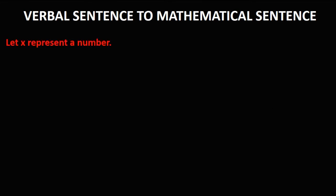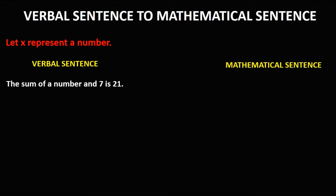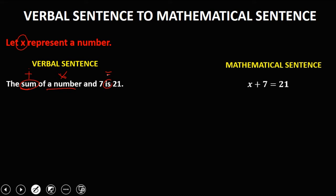So we have this problem. Let x represent a number. This is a verbal sentence and we need to write the mathematical sentence. 'The sum of a number and 7 is 21.' Since we let x represent a number, 'a number' is x, 'sum' means plus, and 'is' means equal. So the mathematical sentence is: x + 7 = 21.